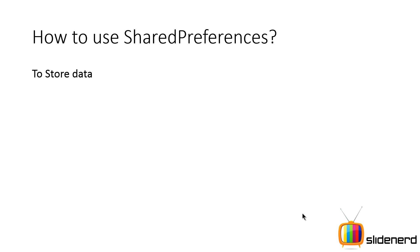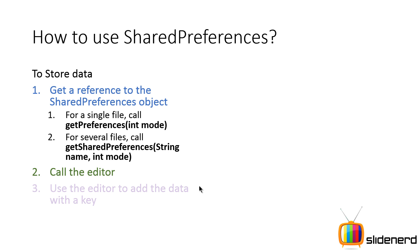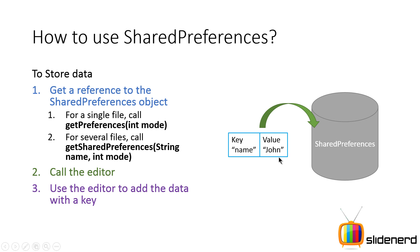Now let's talk about how to store data using Shared Preferences. First, get a reference to the SharedPreferences object, which is responsible for putting data into and getting data from the file. If you have a single file, call getPreferences; if you have several files, call getSharedPreferences with a string name and int mode, which we just discussed. Next, call the editor — there is an object called SharedPreferences.Editor which is responsible for doing all the updates, meaning adding data. You use the editor to add whatever data you want with a key. For example, key as 'name', value as 'John', put that in, and then commit the changes inside the editor.